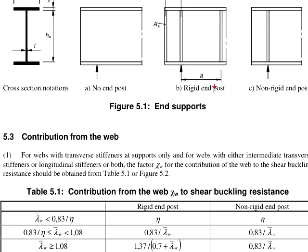When there is a stiffener at the center of the support and there is another stiffener at the end of the member, it is considered as a rigid end post. And the non-rigid end post has a stiffener at the support reactions only.